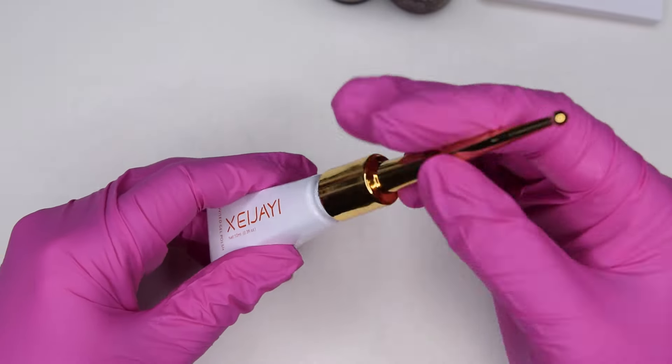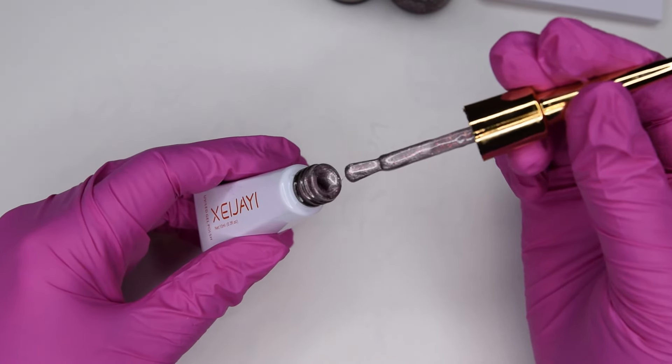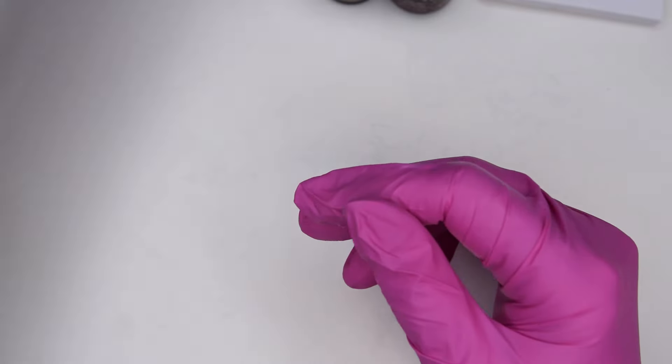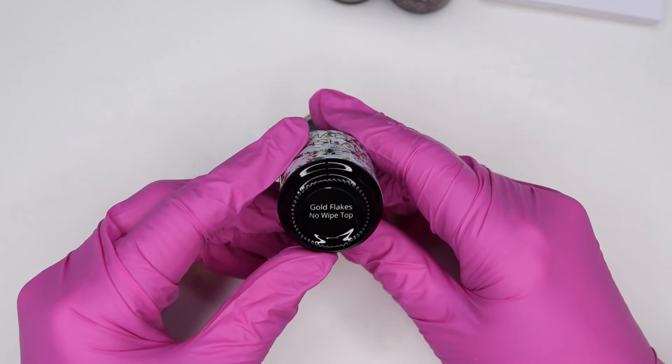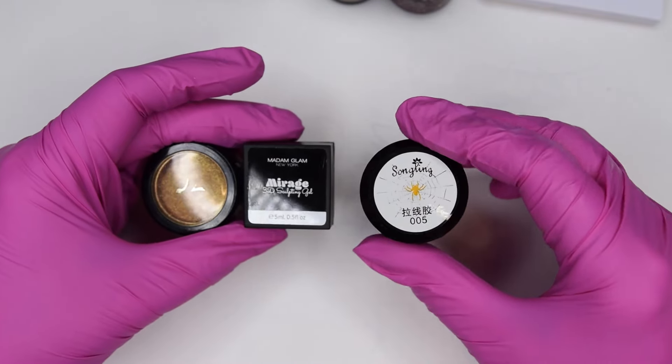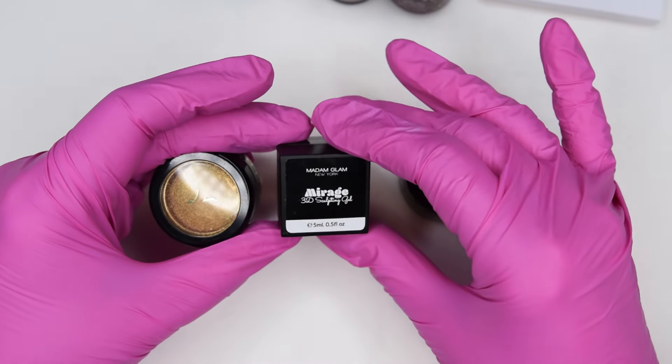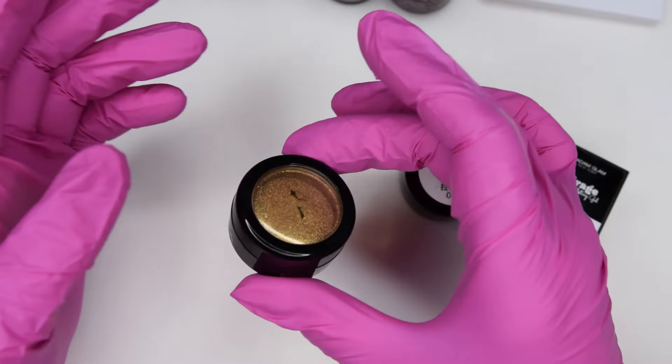And this cat eye gel, it is from Aliexpress. This is a gold flake top coat from Madame Glam. And I will be using a gold spider gel. The Mirage 3D Sculpting Gel. And Brill Bird's chrome powder, gold chrome powder.